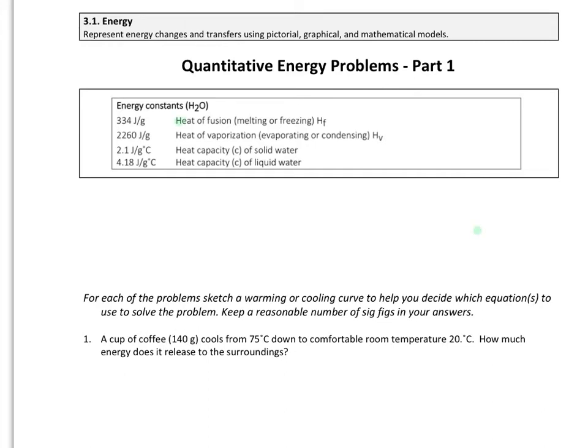First, we've got heat of fusion and heat of vaporization. Heat of fusion is looking at melting or freezing, and it's simply capital H sub F. Heat of vaporization looks at evaporation and condensation, and that's going to be capital H sub V. Now both of these have to do with phase changes, and so this is going to be looking at phase energy.